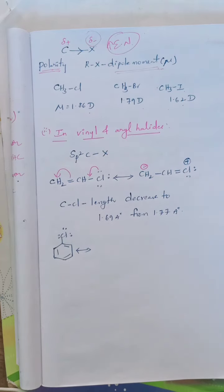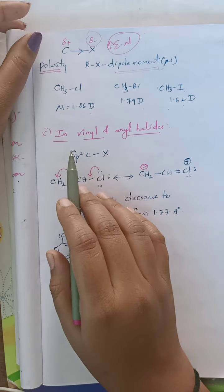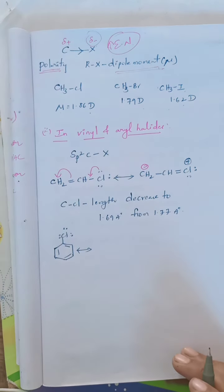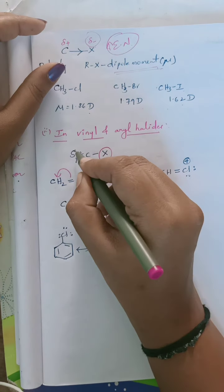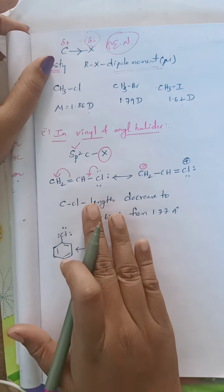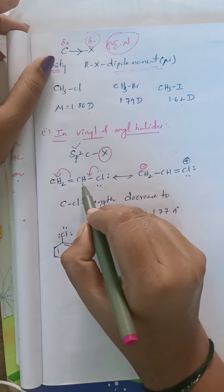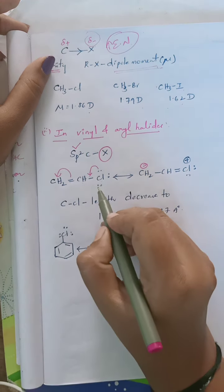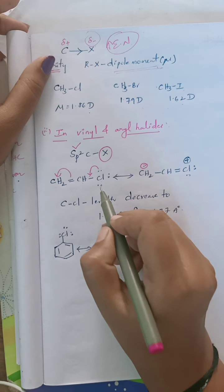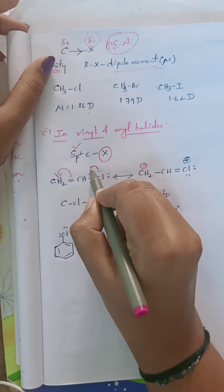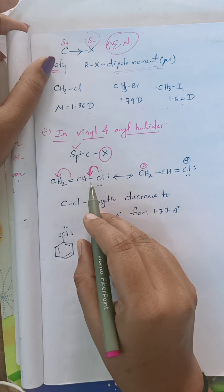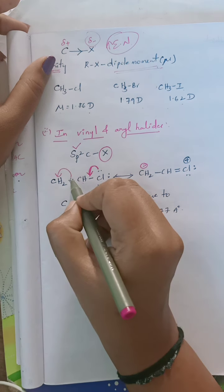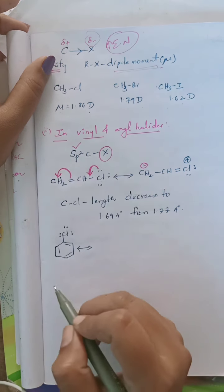That is about the bond nature of carbon and halogen in haloalkanes. Now we will see the same bond nature in vinyl and aryl halides. In vinyl and aryl halides, halogen is attached to an Sp2 hybridized carbon. Halogen contains lone pairs of electrons — three lone pairs are present. If one lone pair of electrons moves towards the carbon, it will form a double bond.